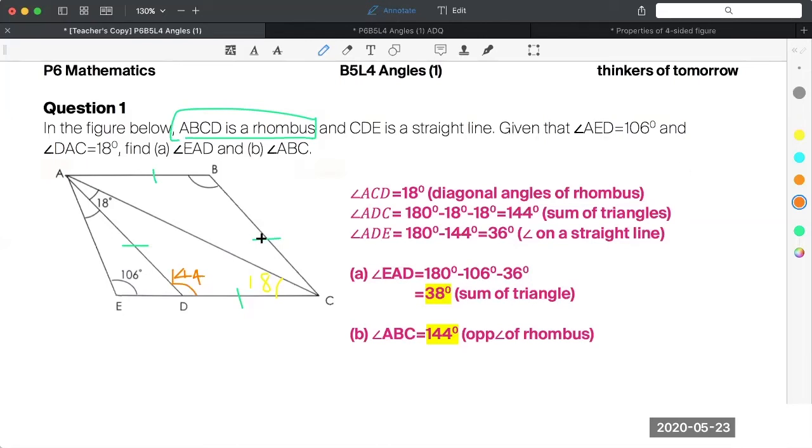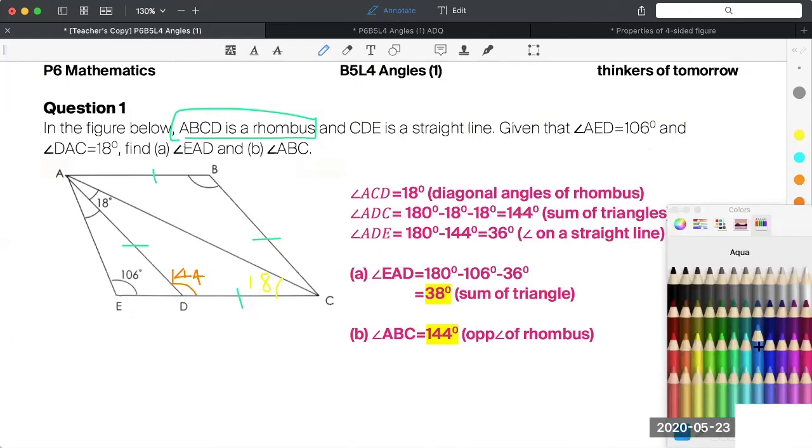Now next, to find EAD, you're one step closer. What is ADE first? ADE - angles on a straight line equal 180. So 180 minus 144 equals 36 degrees.